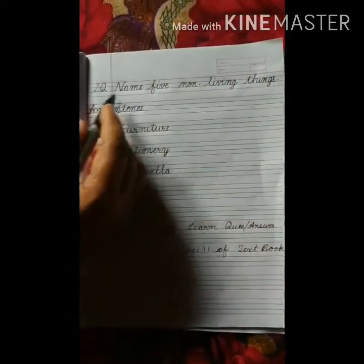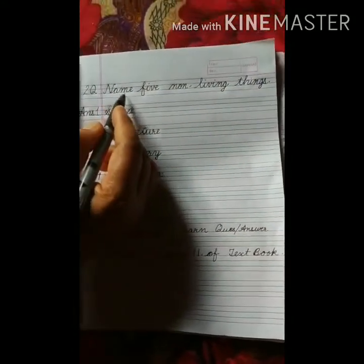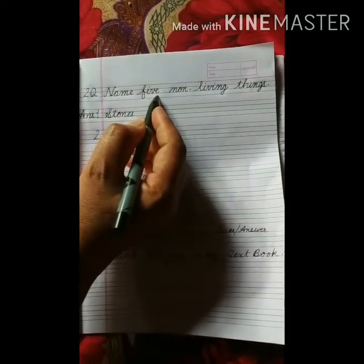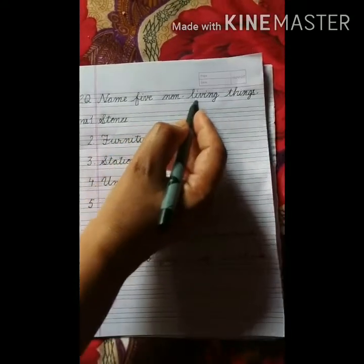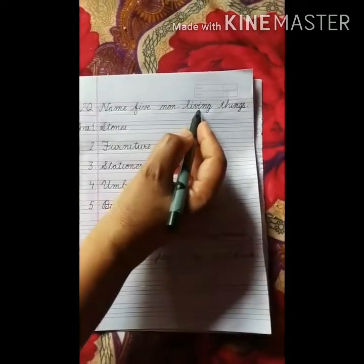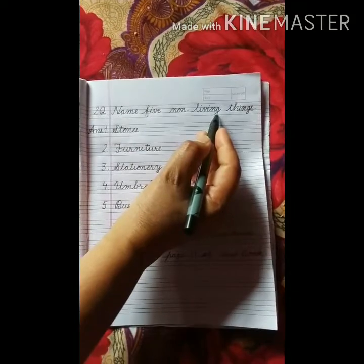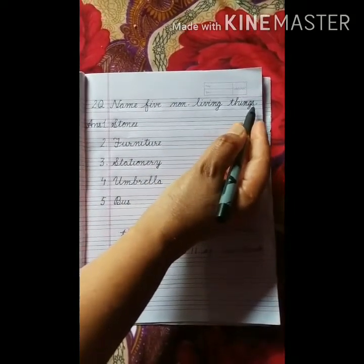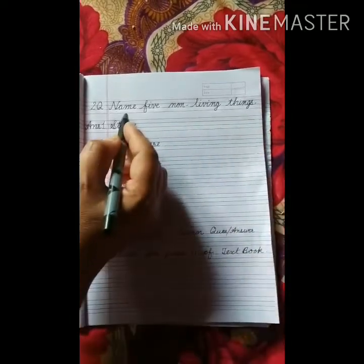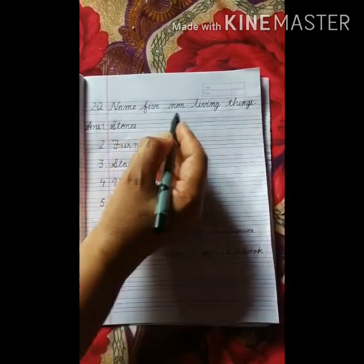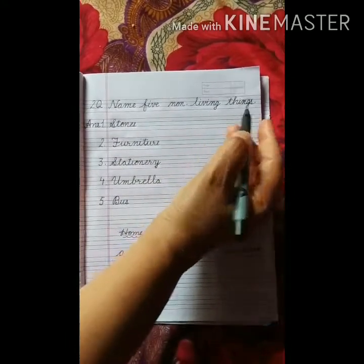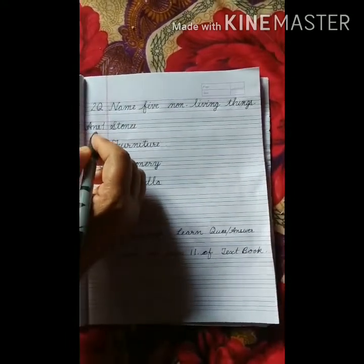Question number 2: Name 5 non-living things. N-O-N, Non, L-I-V-I-N-G, Living, T-H-I-N-G-S, Things. Name 5 non-living things. Right answer. Very good.